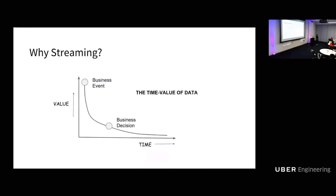Why do we need streaming? This graph shows how the value of data changes with time. Since the time the data is generated by the business event, the value will dramatically go down. When we finally make a business decision, that's when we get value from the data. What we're trying to do with streaming is move the business decision along the curve to make it as close as possible to the business event, so that we can get more value from the data.